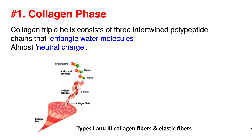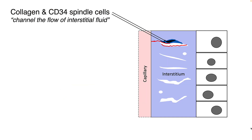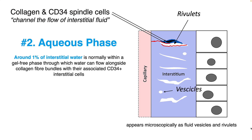The collagen phase consists of collagen triple helix and it can entangle water molecules. It has almost a neutral charge, and the interstitium is usually made up of type 1 and type 3 collagen fibers. It is associated with thin flat spindle-shaped cells that express CD34 molecules, and along with collagen they channel the flow of interstitial fluid into the aqueous phase. Around 1% of interstitial water is normally within this gel-free phase, through which water flows alongside collagen fiber bundles and their associated CD34 interstitial cells. Microscopically, these appear as fluid vesicles and rivulets.